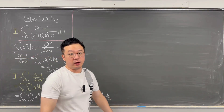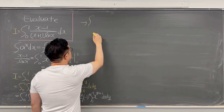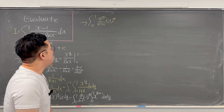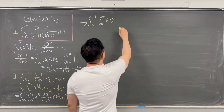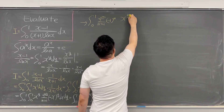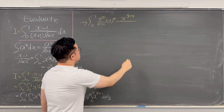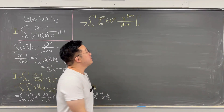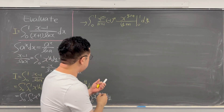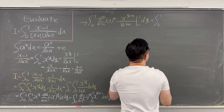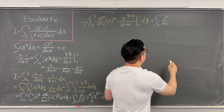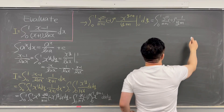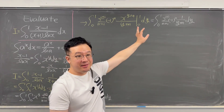Okay, so keeping this expression and working it out: this is the same as the integral from 0 to 1 of the summation from n equals 1 to infinity with alternating sign negative 1 to the n. Working out the inner integral gives x to the power of (y plus n) over (y plus n) from 0 to 1, so we get the summation of negative 1 to the n times 1 over (y plus n), then dy.